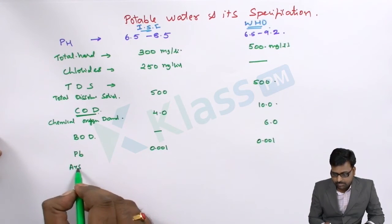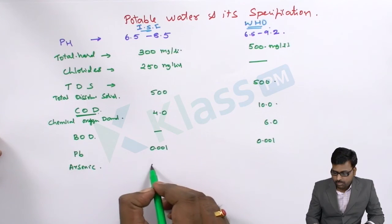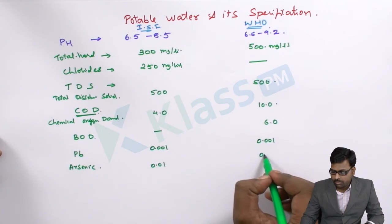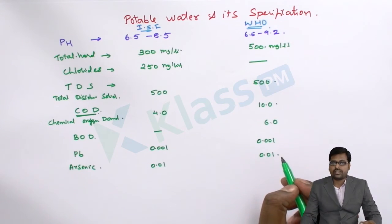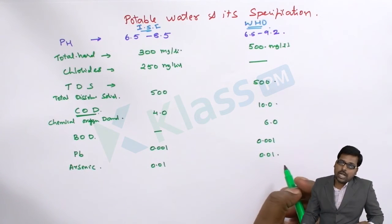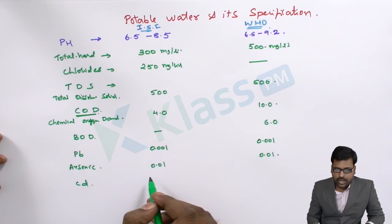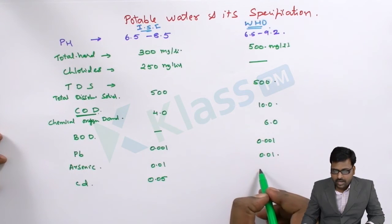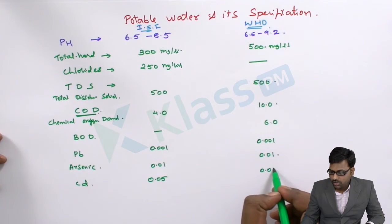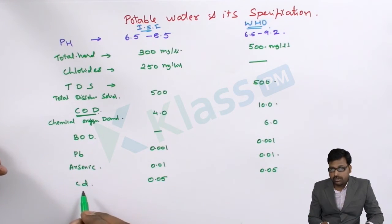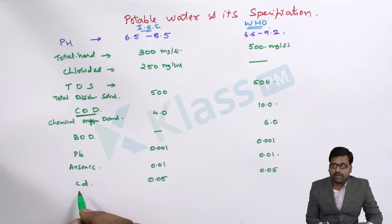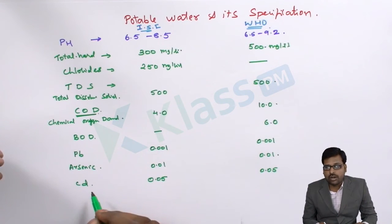And in case of arsenic, it is given 0.01 ppm, so even the traces of these heavy metals will lead to abnormality in the body. And the cadmium if you see the important one, the cadmium is 0.05 ppm and here in the WHO also it is 0.05 ppm. Cadmium leads to the disease called as itai-itai, itai-itai is a disease of Japan origin and the name has been given on the area of Japan.